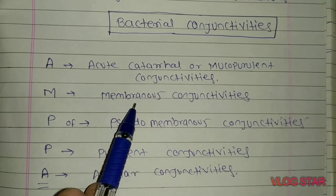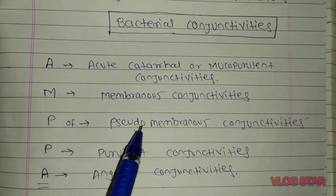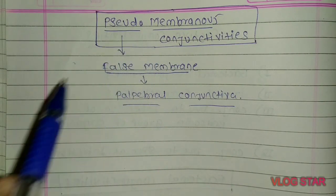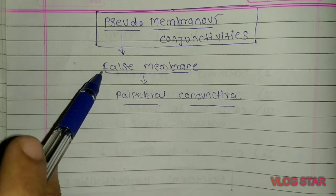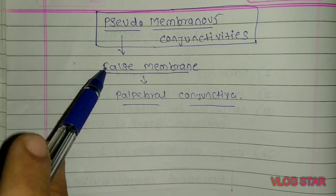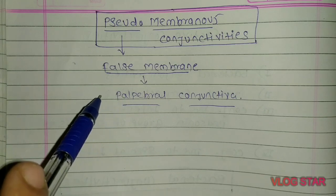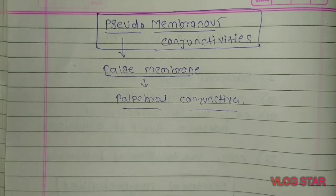In the last session, we finished membranous conjunctivitis. Now let's talk about the third type of bacterial conjunctivitis — pseudomembranous conjunctivitis. The name itself indicates that this is a type of conjunctivitis characterized by the formation of a false membrane. 'Pseudo' means false — this false membrane forms on the palpebral conjunctiva in most cases, and in some cases on the bulbar conjunctiva.